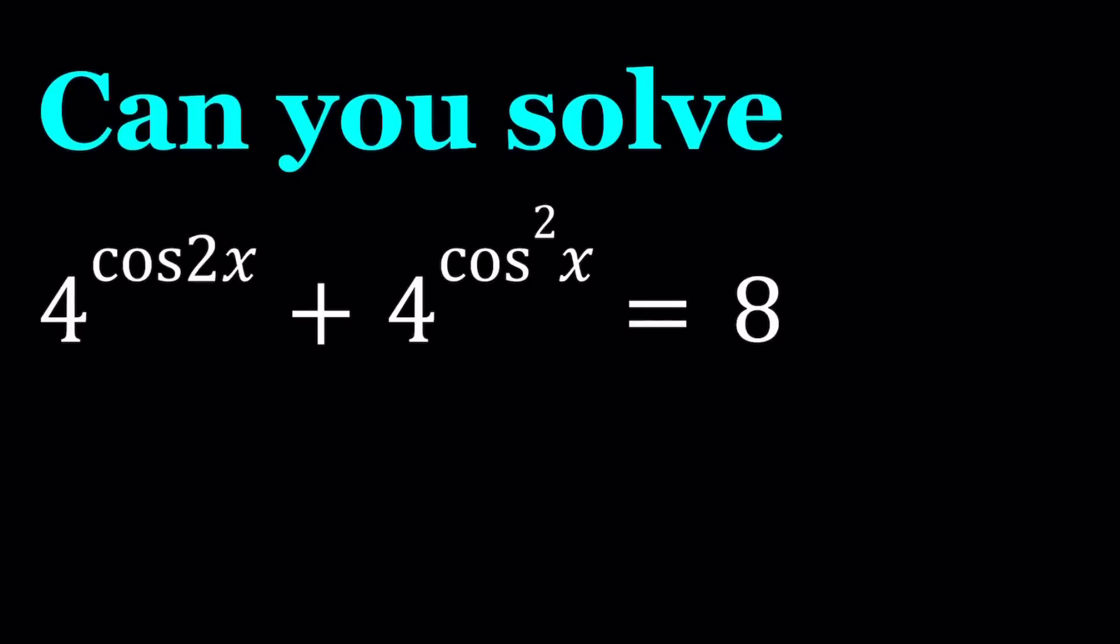Hello everyone, in this video we're going to be solving an exponential trigonometric equation or a trigonometric exponential equation, whatever you want to call it. We have 4 to the power cosine of 2x plus 4 to the power cosine squared of x equals 8 and we're going to be solving for x values.